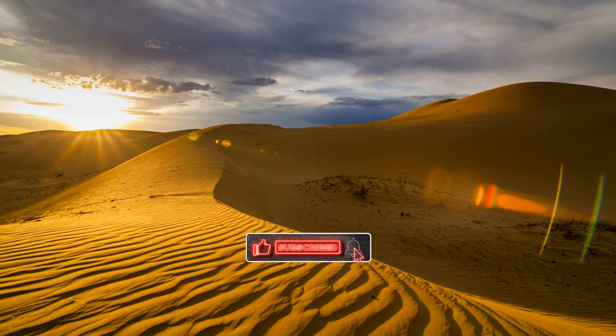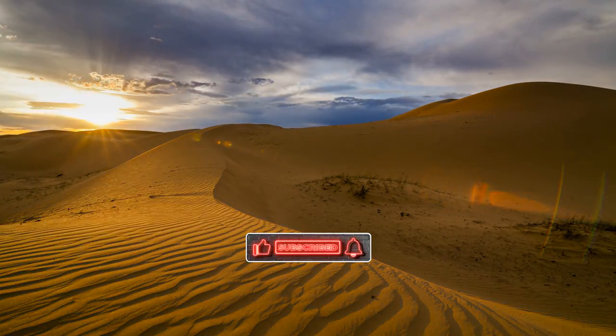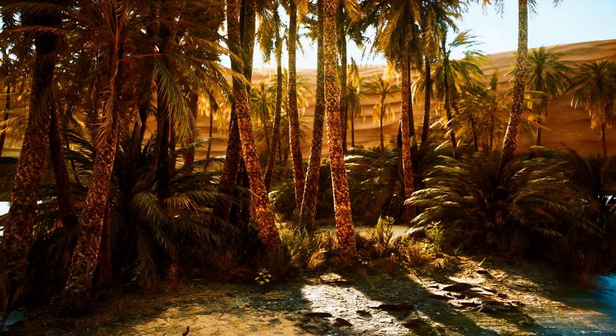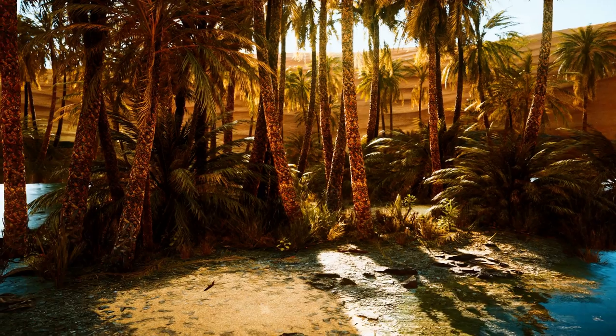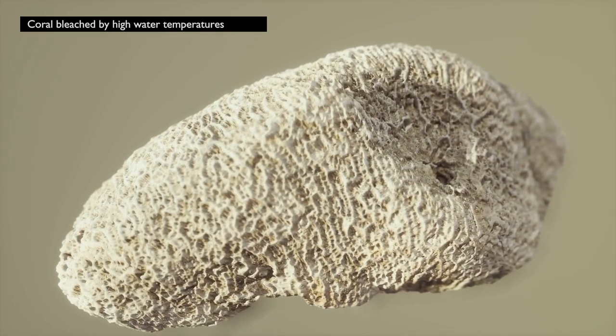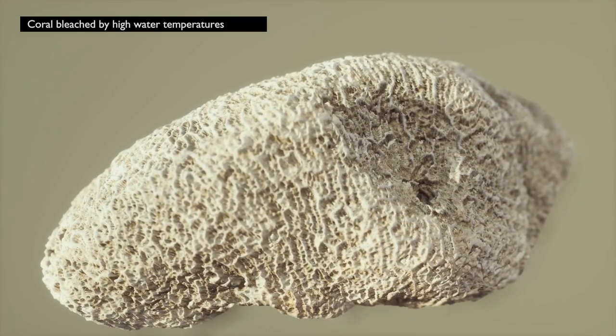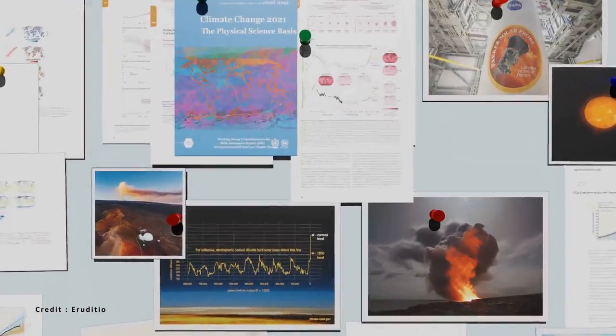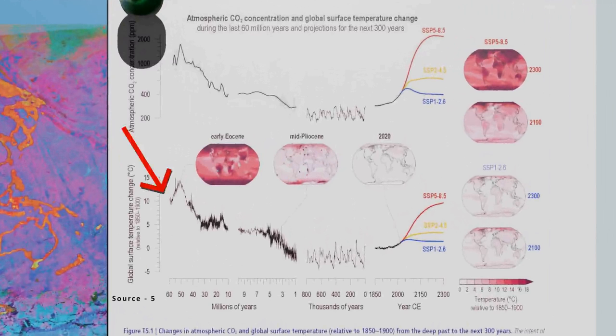There is no shortage of examples of global warming of our planet. Scientists call them hyperthermal events. 56 million years ago, records show that the Earth experienced a significant rise in temperatures. This hyperthermic event was spread over 20,000 years, and the mean temperature of our planet is believed to have increased by about 5 to 8 degrees Celsius.